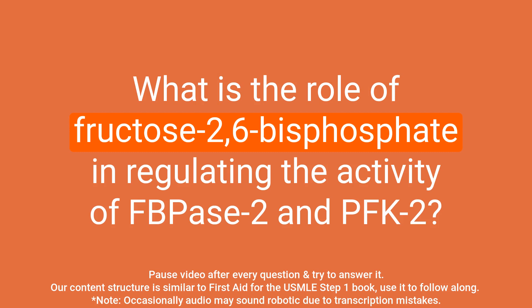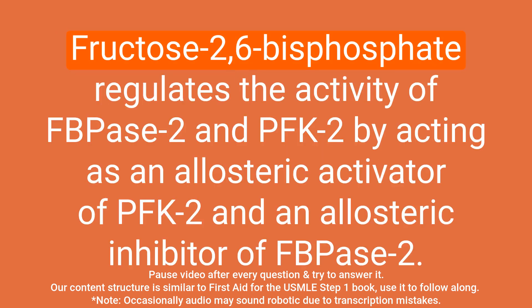Question: What is the role of fructose 2,6-bisphosphate in regulating the activity of FB-PACE-2 and PFK-2? Answer: Fructose 2,6-bisphosphate regulates the activity of FB-PACE-2 and PFK-2 by acting as an allosteric activator of PFK-2 and an allosteric inhibitor of FB-PACE-2.